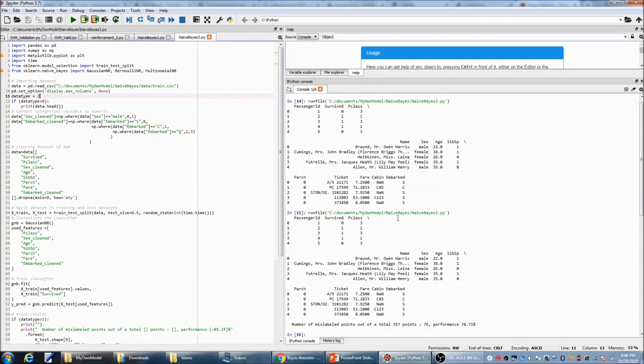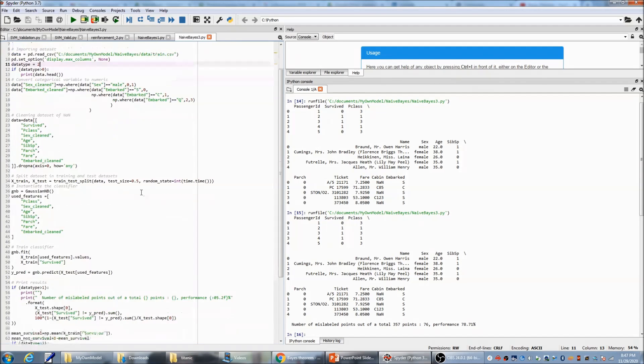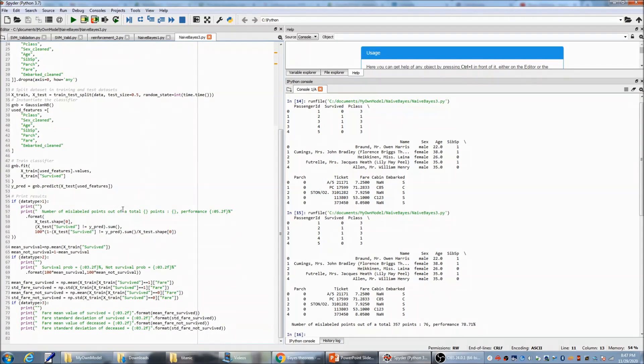Okay. After we build our model, you can see, we use our training set to train our data. And the result shows, number of mislabeled points out of the total 357 is 76. So, about 78.71% was accurate with our model.